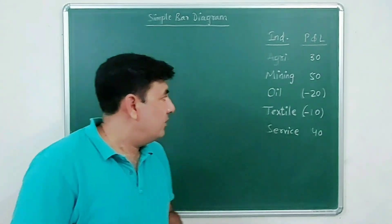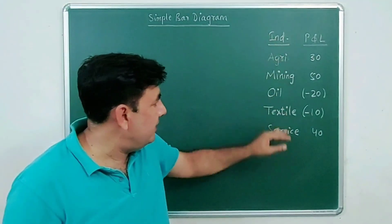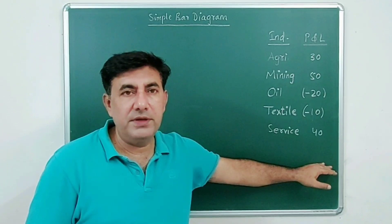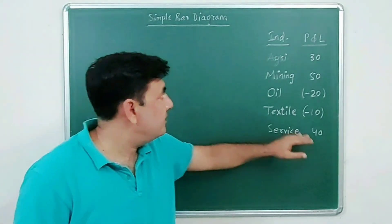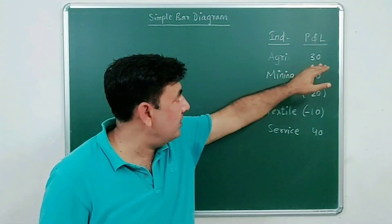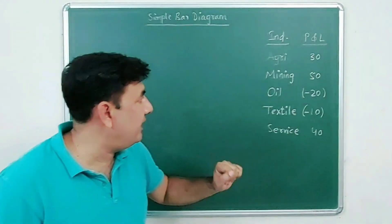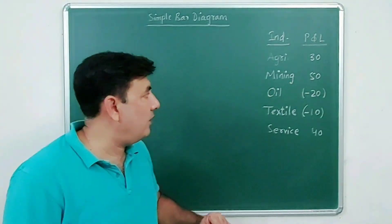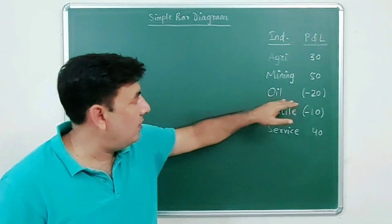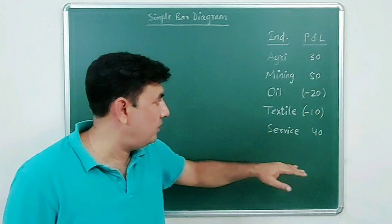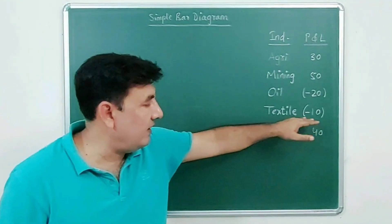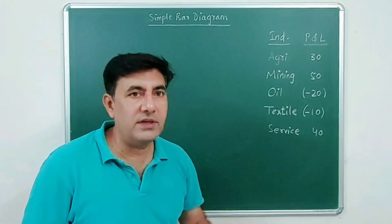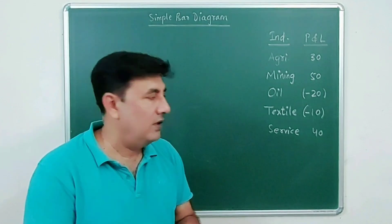Here, industries are given along with their profit and loss figures. As you can see: Agriculture has a profit of 30 crores, Mining a profit of 50 crores, Oil has a loss of 20 crores, Textile has a loss of 10 crores, and Service has a profit of 40 crores.